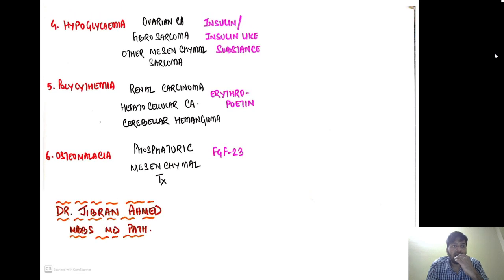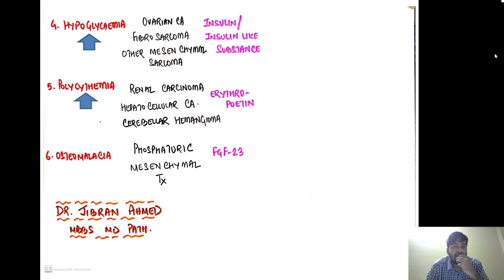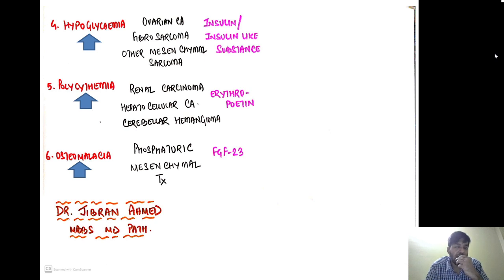Other endocrinopathies include hypoglycemia, seen in ovarian carcinoma, fibrosarcoma, and other mesenchymal sarcomas, due to release of insulin or insulin-like substances. Polycythemia is seen in renal carcinoma, hepatocellular carcinoma, and cerebellar hemangioma, due to release of erythropoietin from these tumors. Lastly, osteomalacia is seen in phosphaturic mesenchymal tumors because of the release of FGF-23.